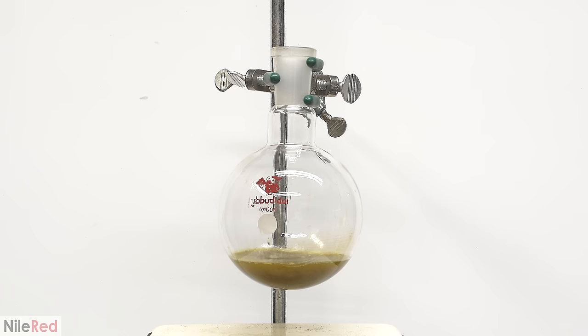So after about an hour, I take it off the stand and there's quite a bit of solid stuff. This is very easily removed by just passing it through a little bit of cotton. The cotton and the flask are washed a few times with a little bit of isopropanol.